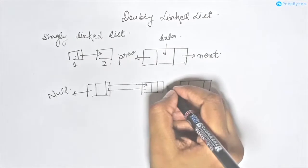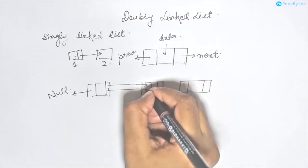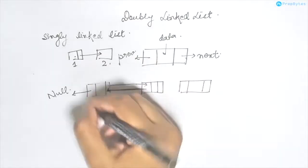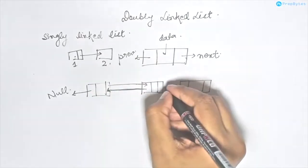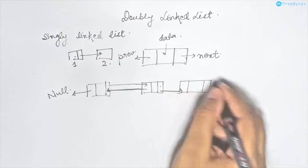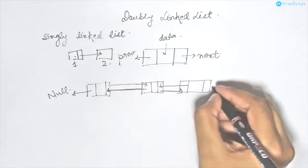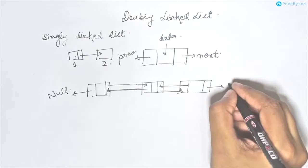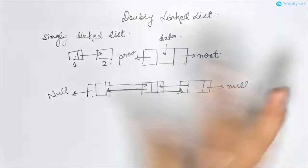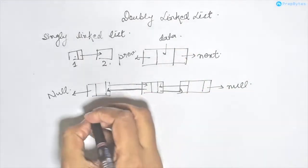Similarly, this particular node has a link to its previous node as well as a link to its next node. Similarly, this node will have a link to its previous node and since there is no next node, it will be null. So let's try to assign addresses to these individual nodes and try to understand it once more.